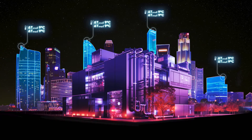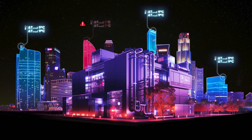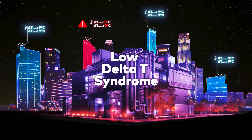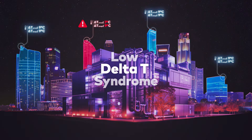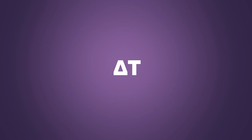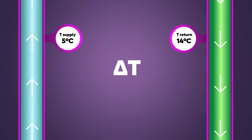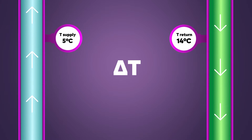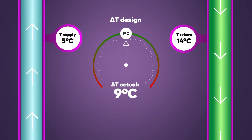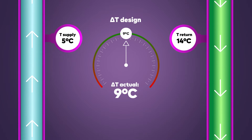Today we're exploring a specific HVAC challenge in buildings known as Low-Delta-T Syndrome. But before we dive into this, let's first understand what Delta-T means. Delta-T is the temperature difference between the supply and return water in an HVAC system. This fundamental concept can tell us a lot about how efficiently your HVAC system operates.